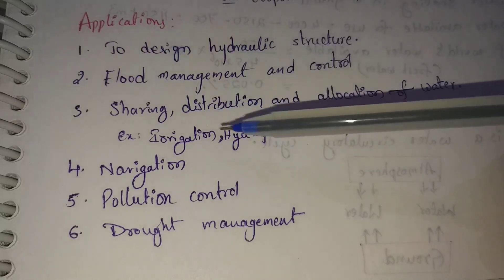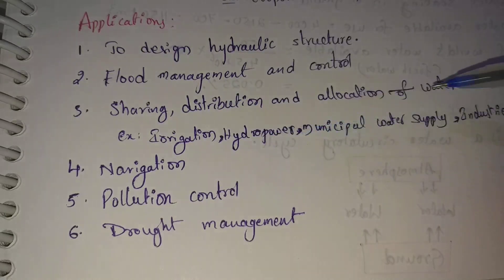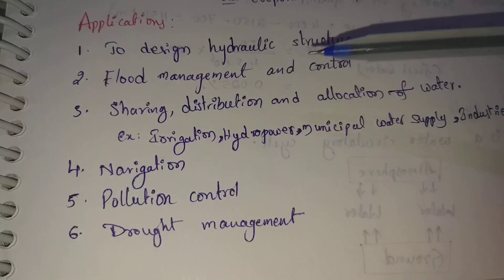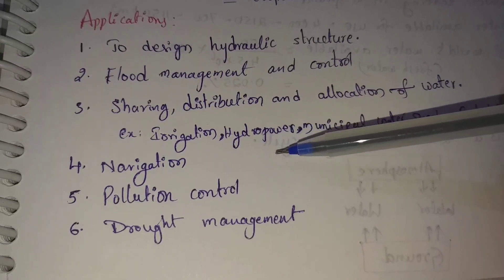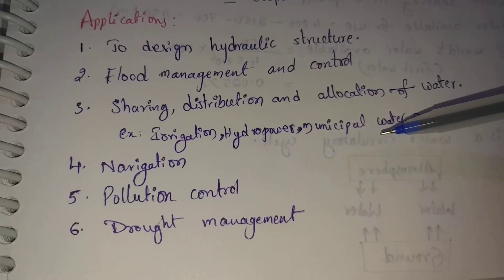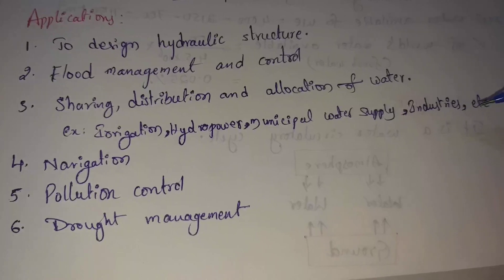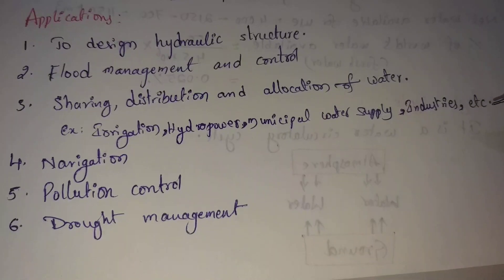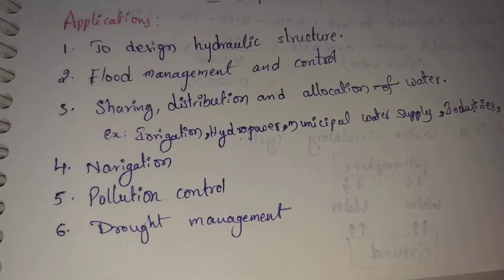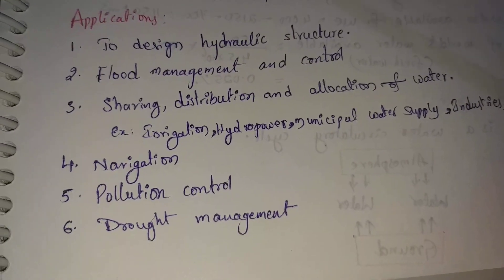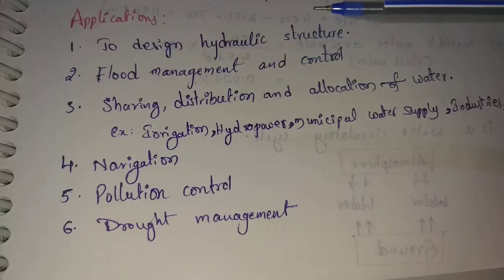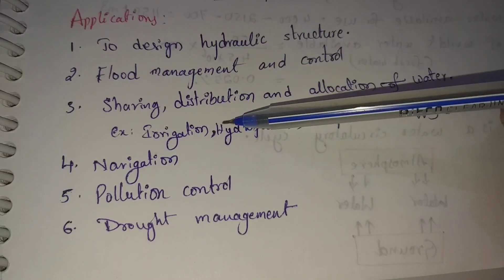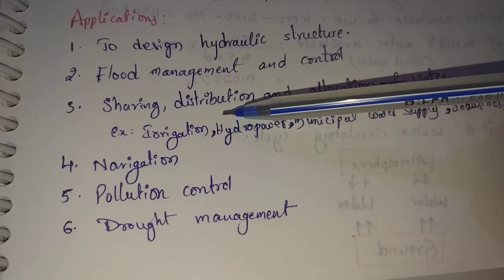Next, sharing, distribution, and allocation of water. For example: irrigation, hydropower, municipal water supply, and industries. Here we manage the water, floods, and dams and store water.